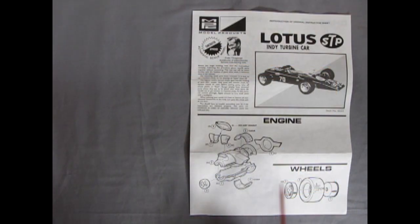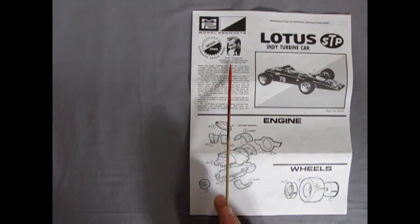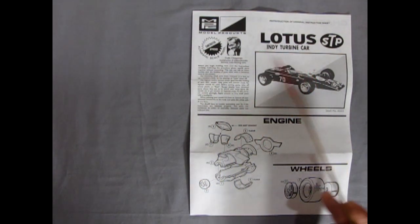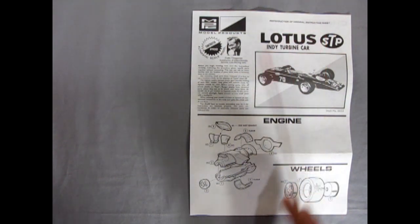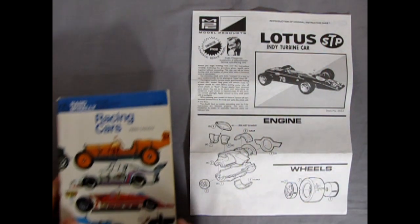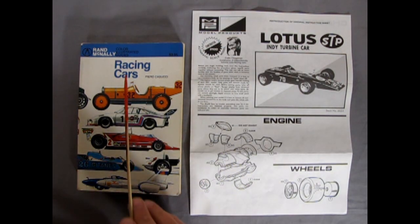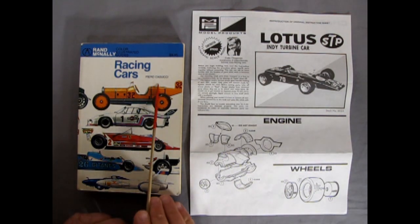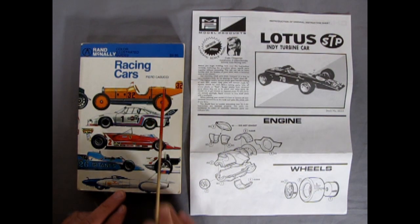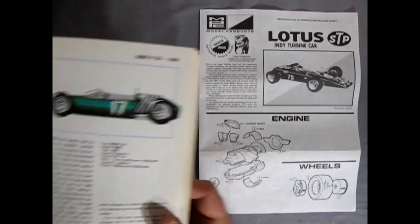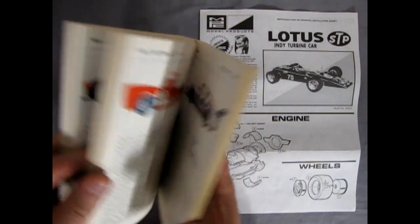Here we have the instruction sheet for a Lotus Indy turbine car. There isn't much history in this about the car itself. The only thing we really get is Colin Chapman, constructor of internationally famous Lotus racing cars. This is a reproduction of the original instruction sheet. Now where I got my information from is this nice old book I have. It's Rand McNally's Racing Cars Color Illustrated Guide by Piero Casusi. It's nice because it's got the write-ups of each of the cars and everything. I've had this since I was a kid back in the 80s.